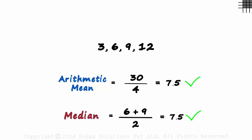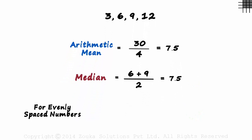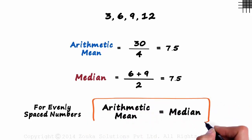And this will always be true. For a set of evenly spaced numbers, the arithmetic mean will always be equal to the median. This is a very important concept.